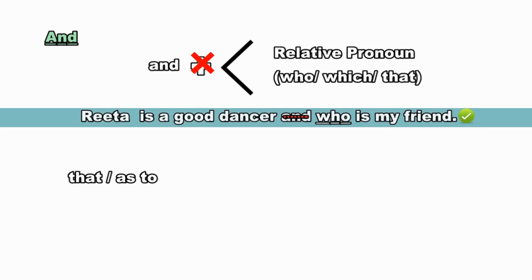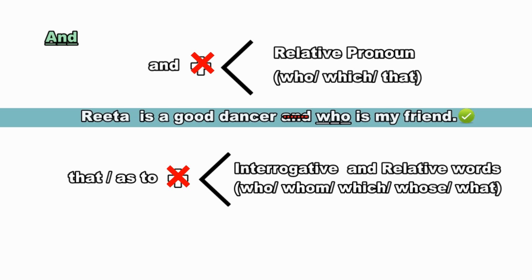For example, we cannot say: 'Rita is a good dancer and who is my friend.' To correct this sentence, we should remove 'and'. So the correct sentence is: 'Rita is a good dancer, who is my friend.'